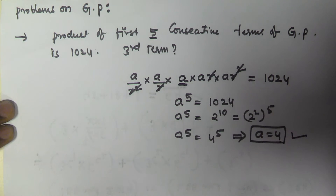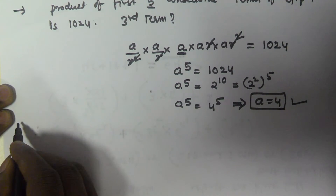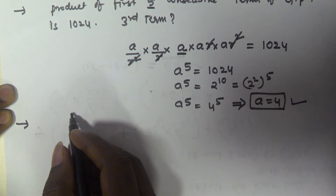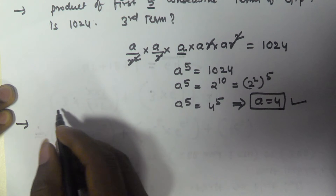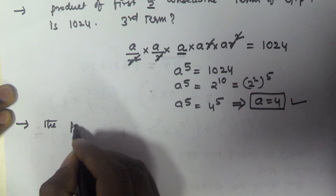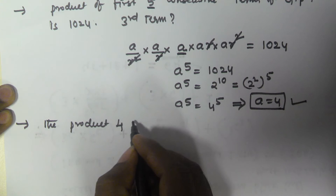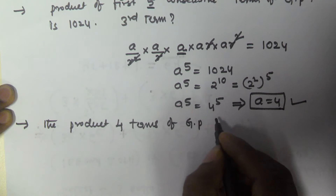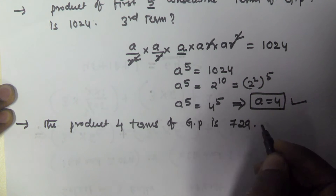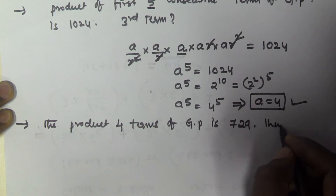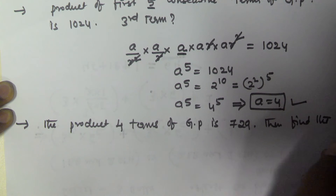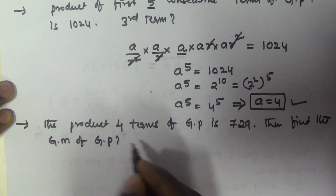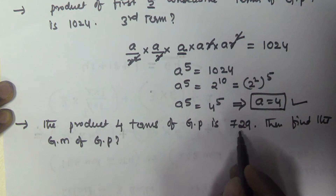I hope you got that one. Now we will see another problem: the product of four terms of a geometric progression is 729, and we have to find the geometric mean of the geometric progression.